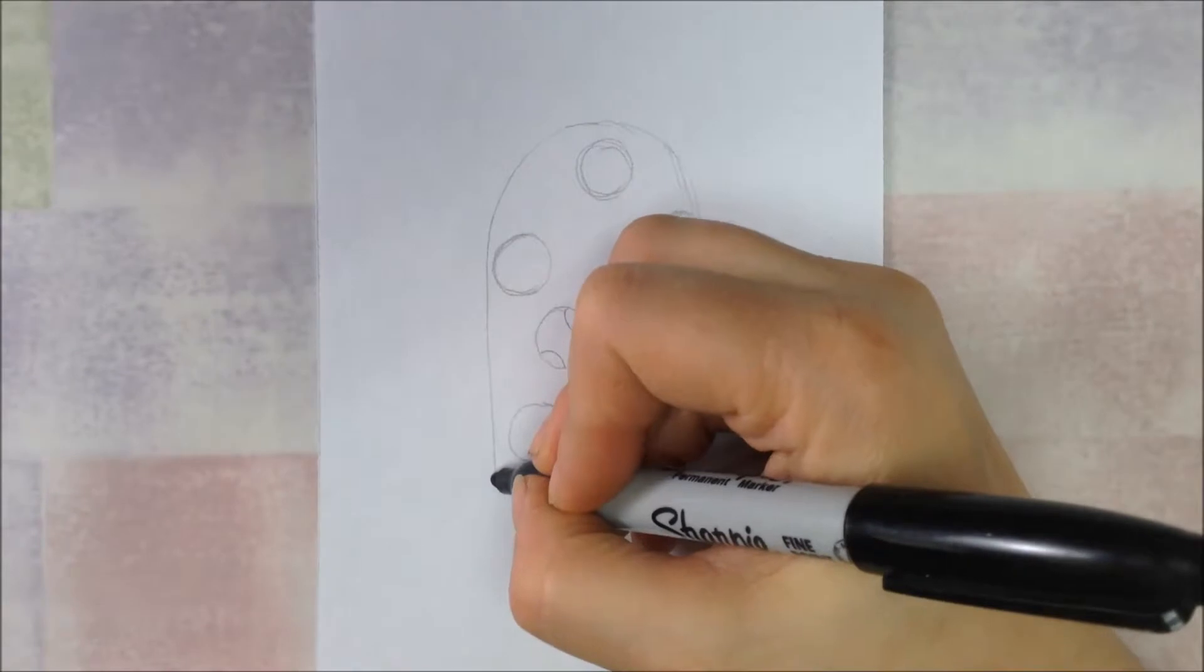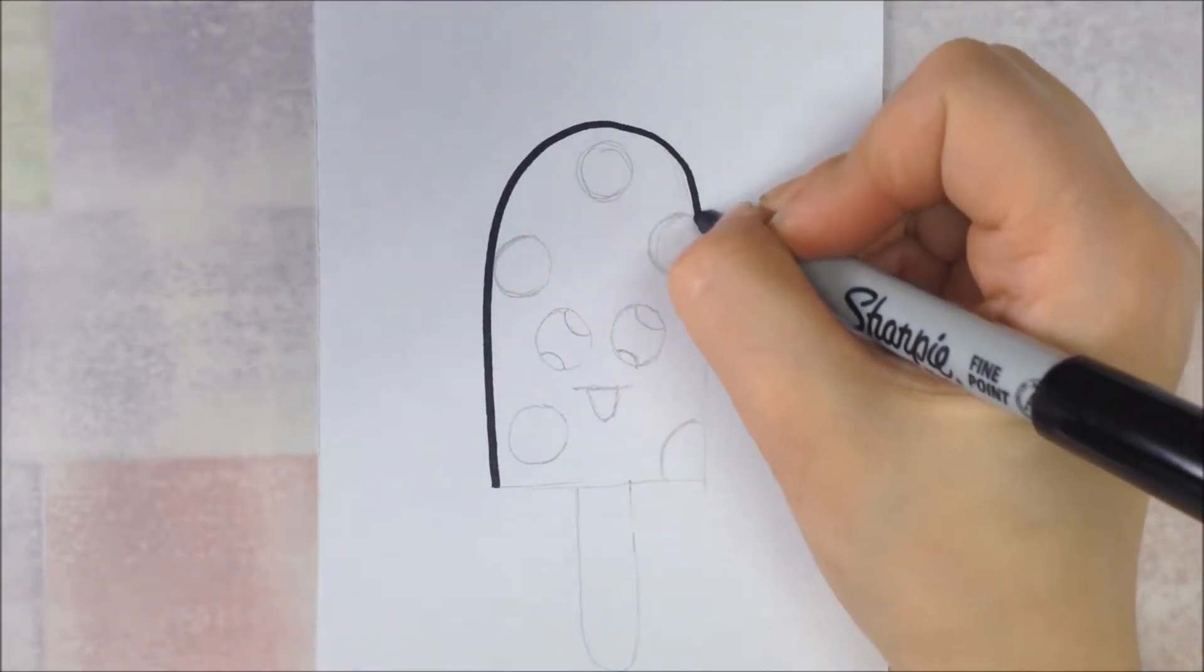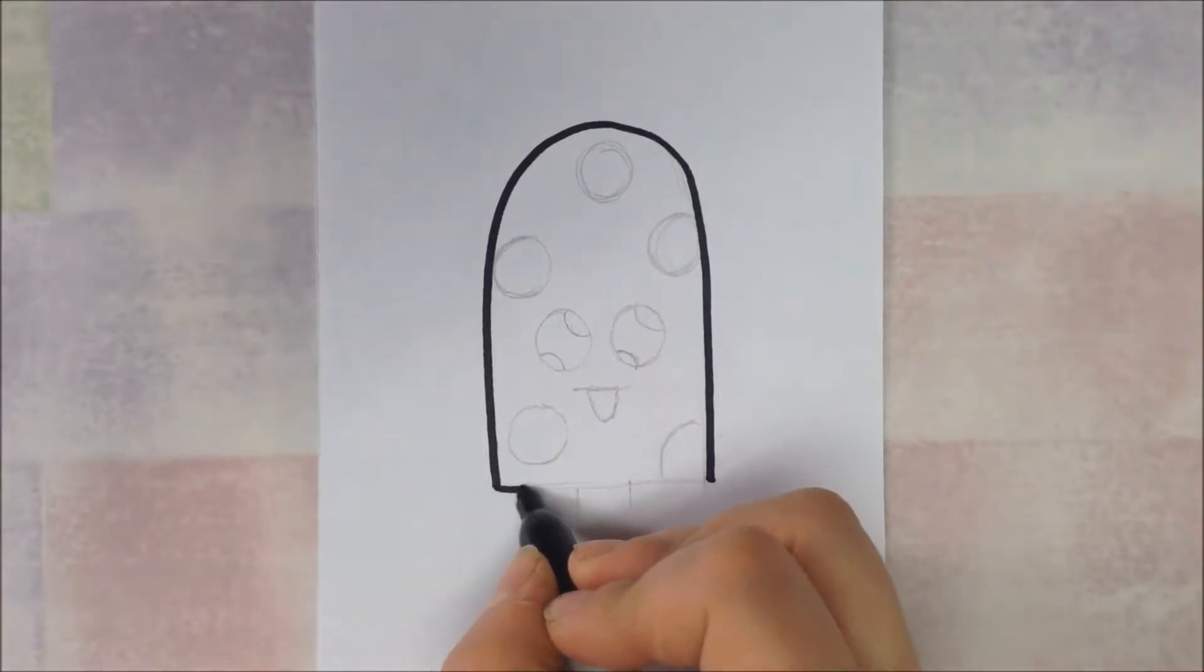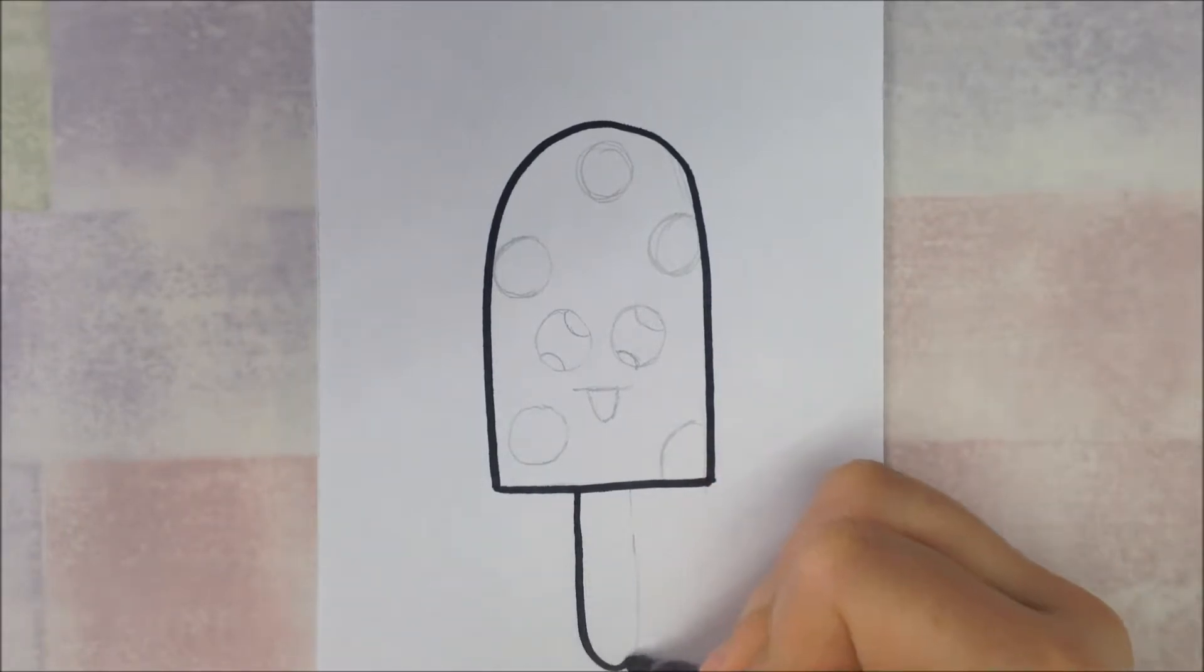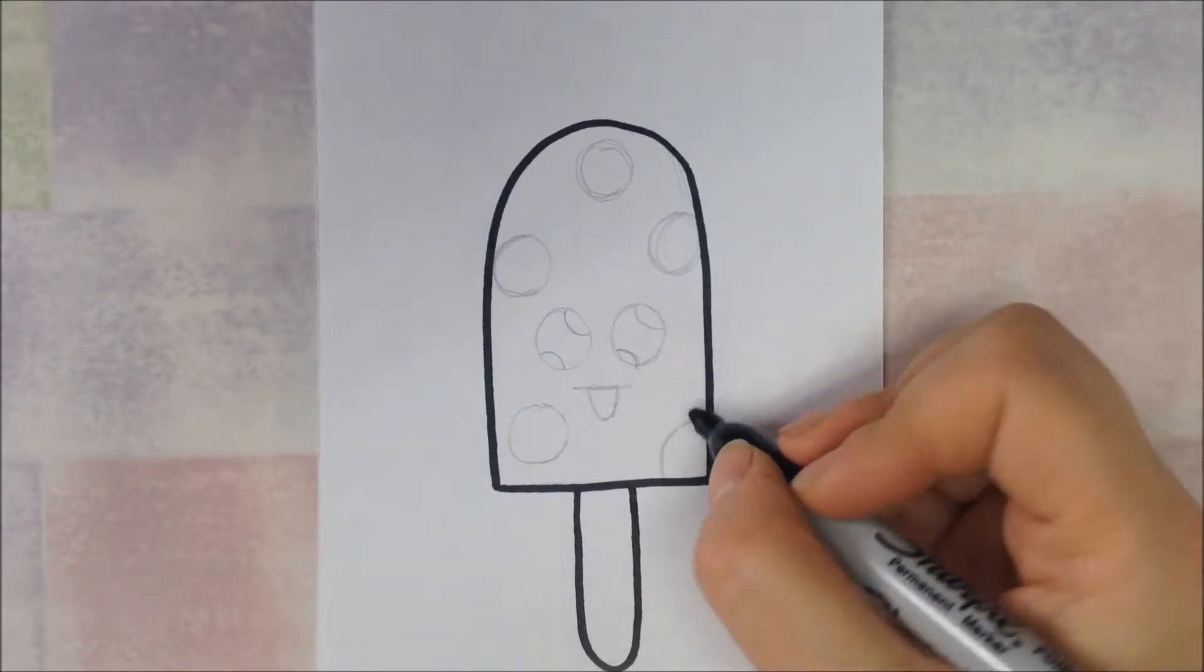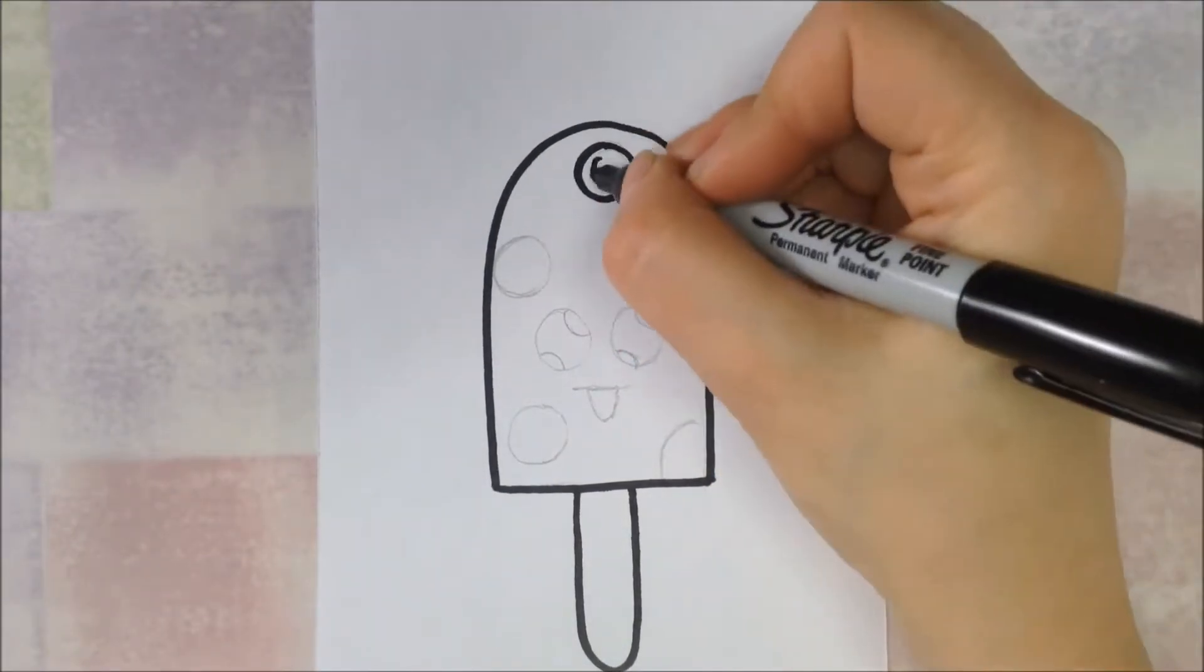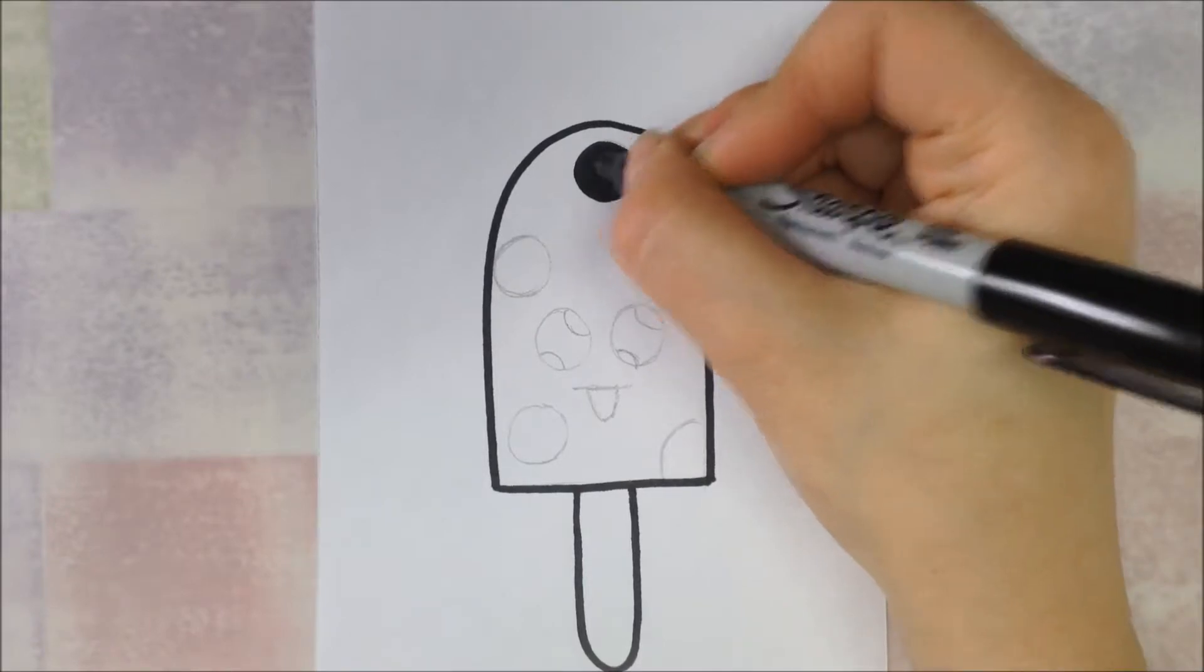Now we're going to outline everything with black permanent marker. This is going to make your drawing stand out and pop off the page. It also helps when you're coloring so that it doesn't smear. If you use a regular marker and then color your ladybug red, they'll likely smear together. So a permanent marker is a good choice. Outline your spots and fill them in.